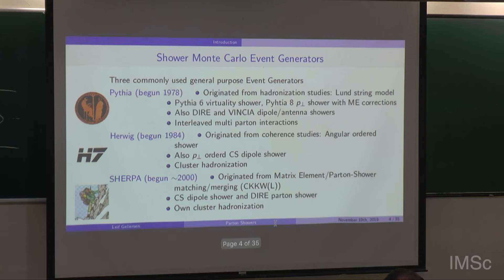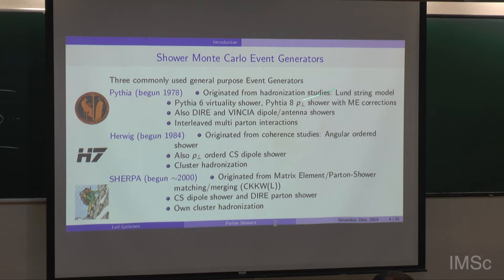There are three heavily used Monte Carlo event generator programs for multi-purposes. The oldest one is Pythia, developed in Lund where I'm from. Work began in 1978 with hadronization studies, from the Lund string model. Pythia 6 used the virtuality-ordered shower, while nowadays Pythia 8 has a pT-ordered shower and employs matrix element corrections. The latest release includes Dire and Vincia showers. Something unique about Pythia is that multi-parton interactions are implemented in an interleaved model.